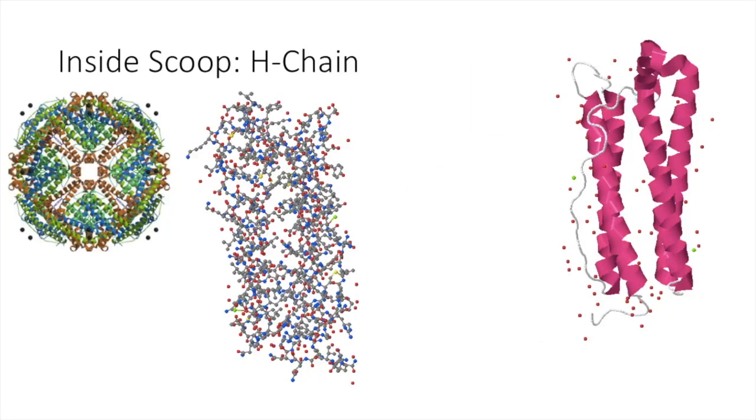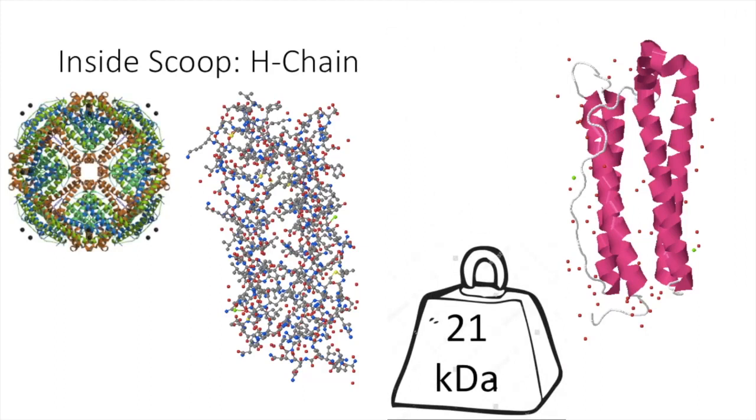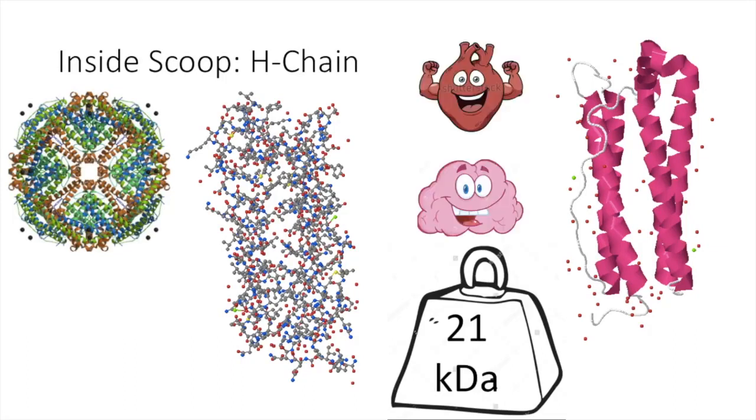There is also a heavy chain of 21 kilodaltons that is more active in iron metabolism. Ferritins rich in H-chains tend to be in the brain and heart because these areas require lots of oxygen.